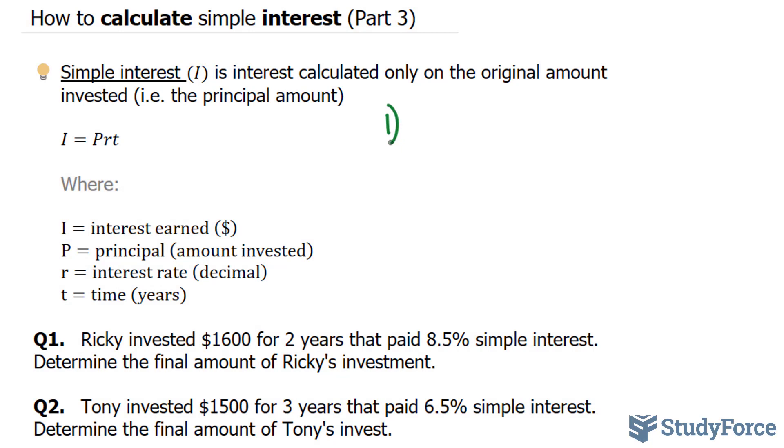In question one, they tell us that Ricky invested $1,600, which is our P, our principal amount, for two years. That paid 8.5% simple interest. Determine the final amount of Ricky's investment.